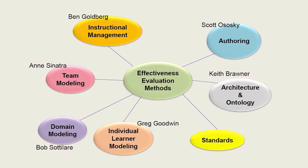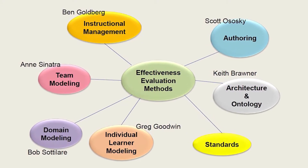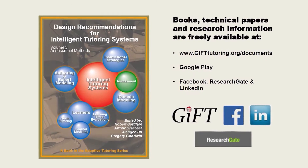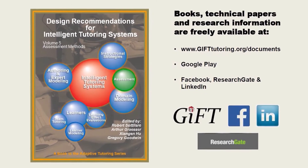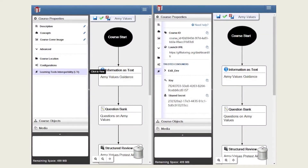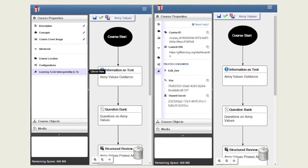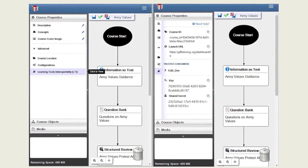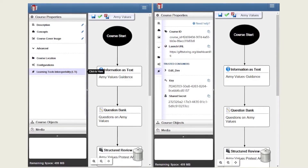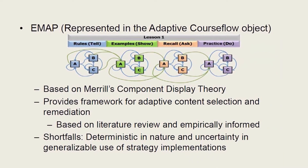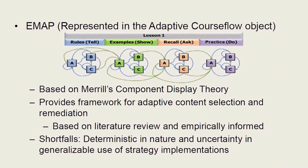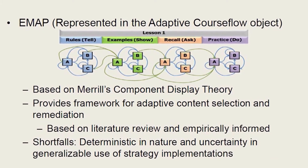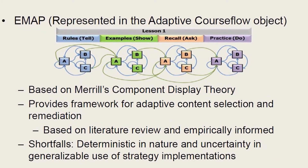Since its inception in 2012, GIFT has been focused on providing capabilities to reduce the skills and time required to author instructional tutoring systems, to automate the detection of learner and team states as a basis for automating instructional decisions in real-time, and finally, to make it easier for instructors and scientists to evaluate the effectiveness of various adaptive instructional policies, strategies, and tactics.